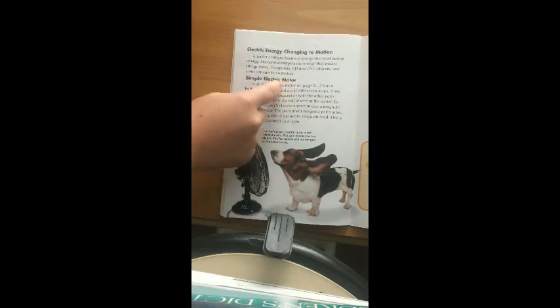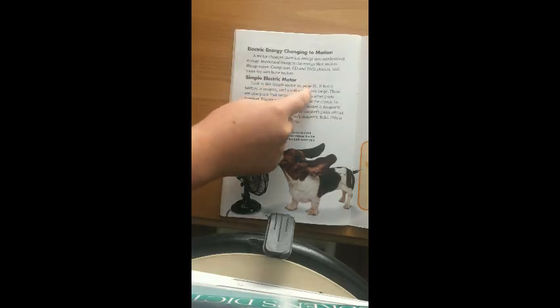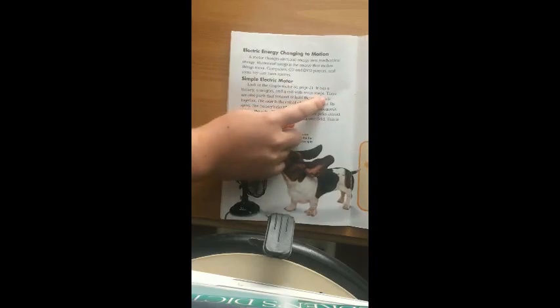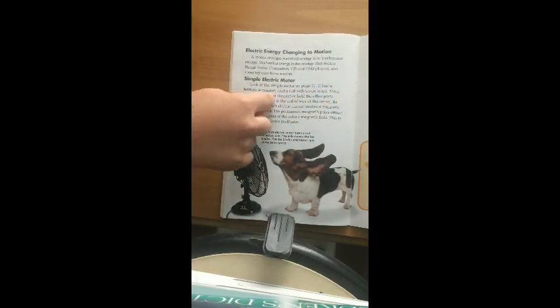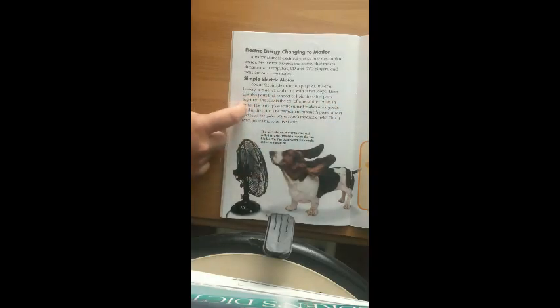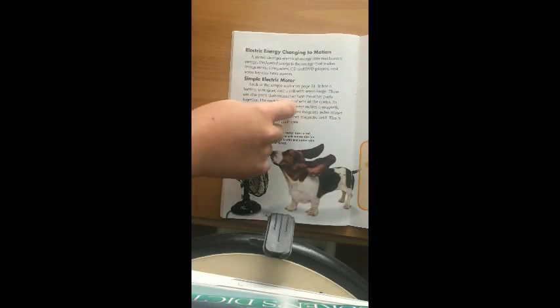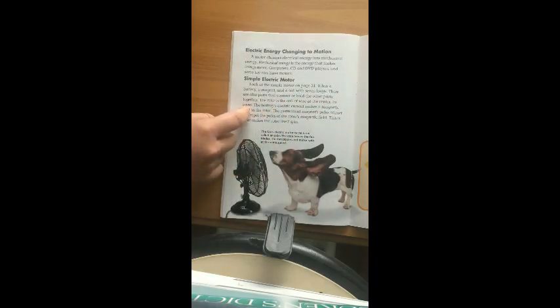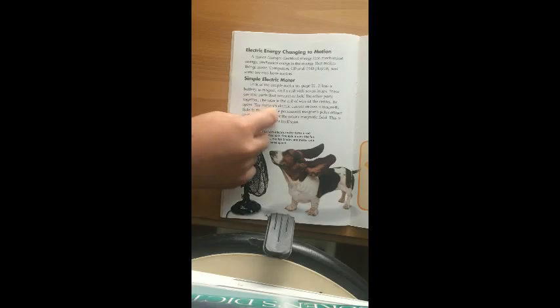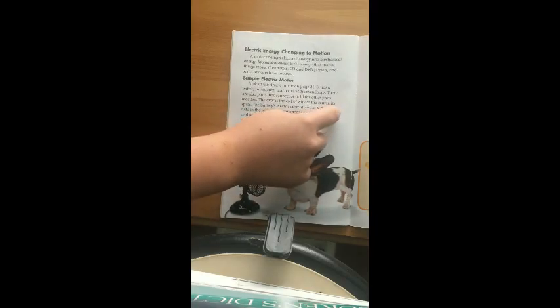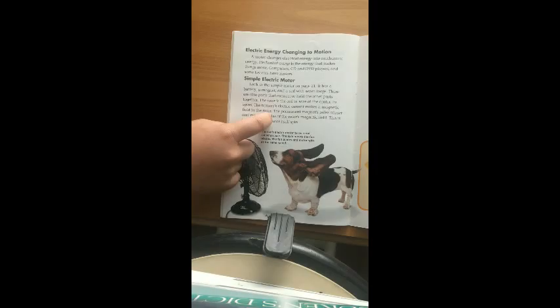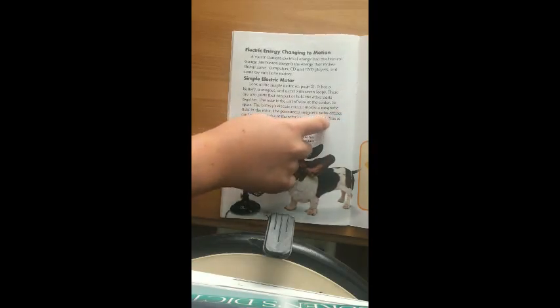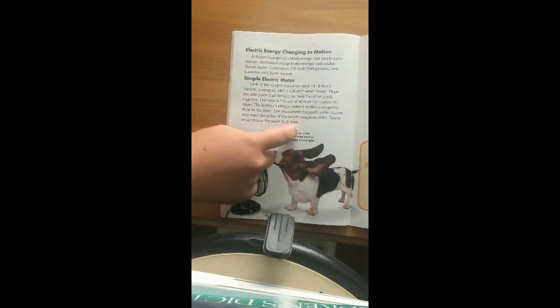Simple electric motor. Look at the simple motor on page 21. It has a battery, a magnet, and a coil with seven loops. There are also parts that connect or hold the other parts together. The rotor is the coil of wire at the center. It spins. The battery's electric current makes the magnetic field in the rotor. The permanent magnet's poles attract and repel the poles of the rotor's magnetic field. This is what makes the rotor itself spin.